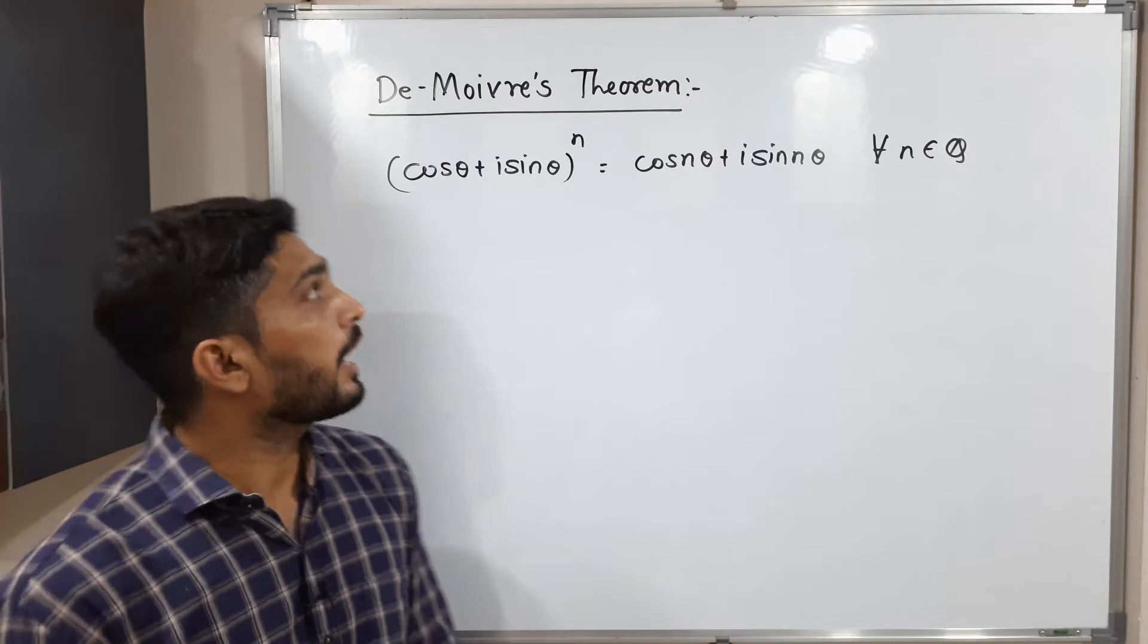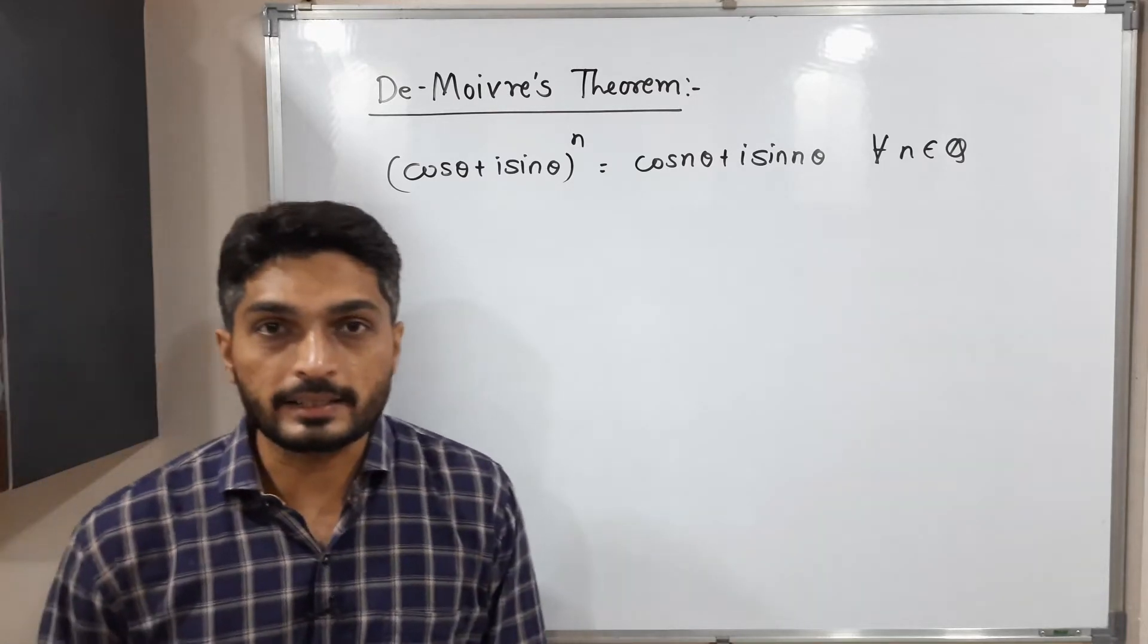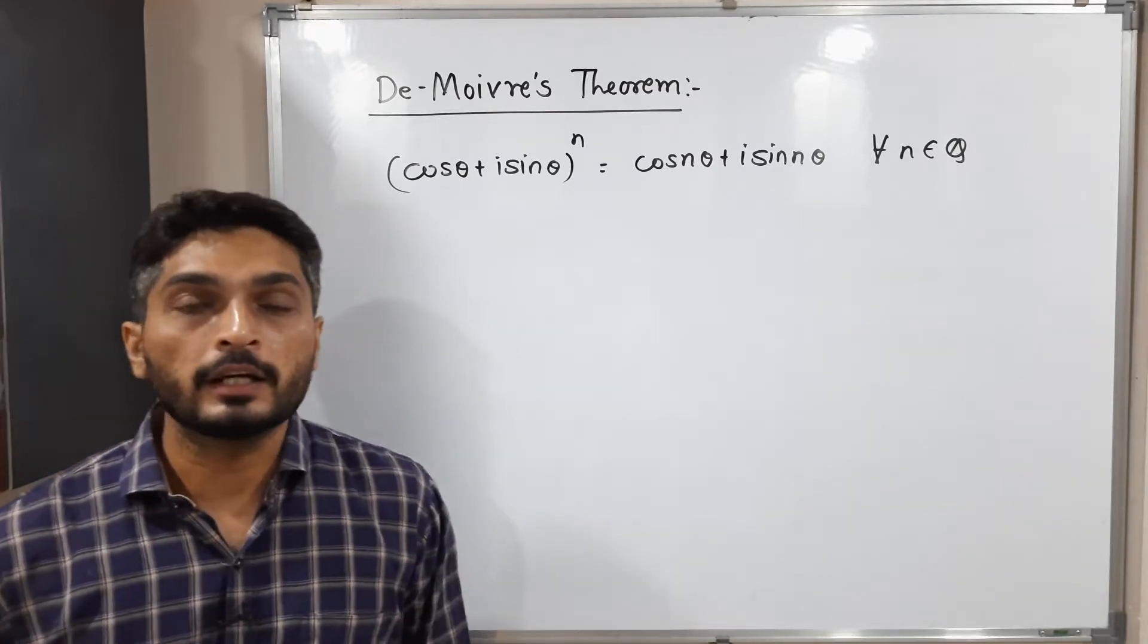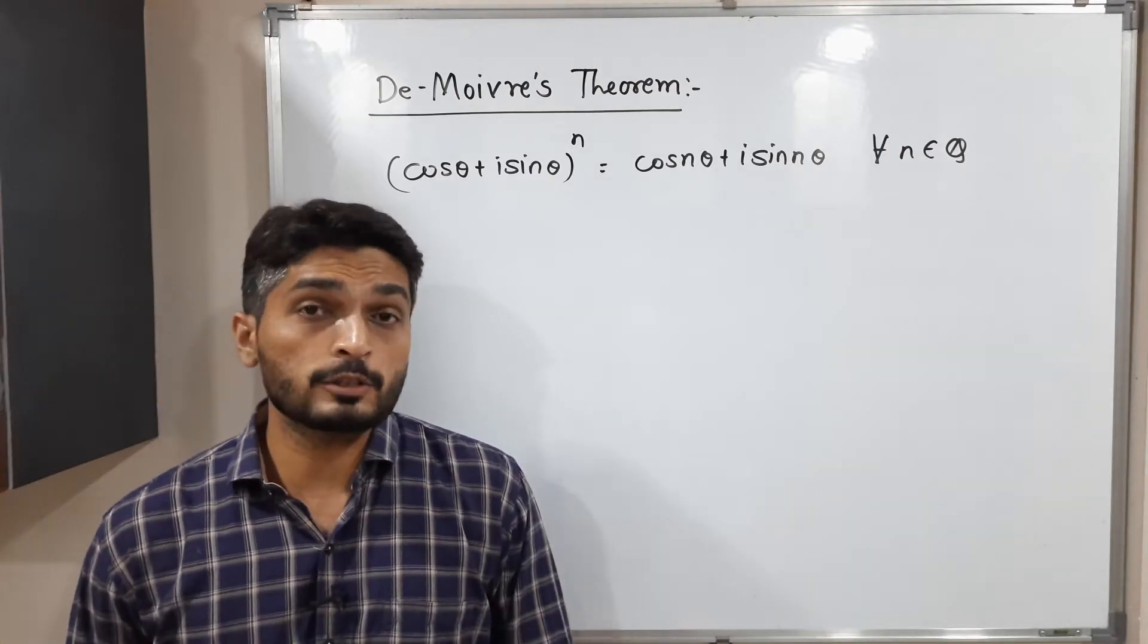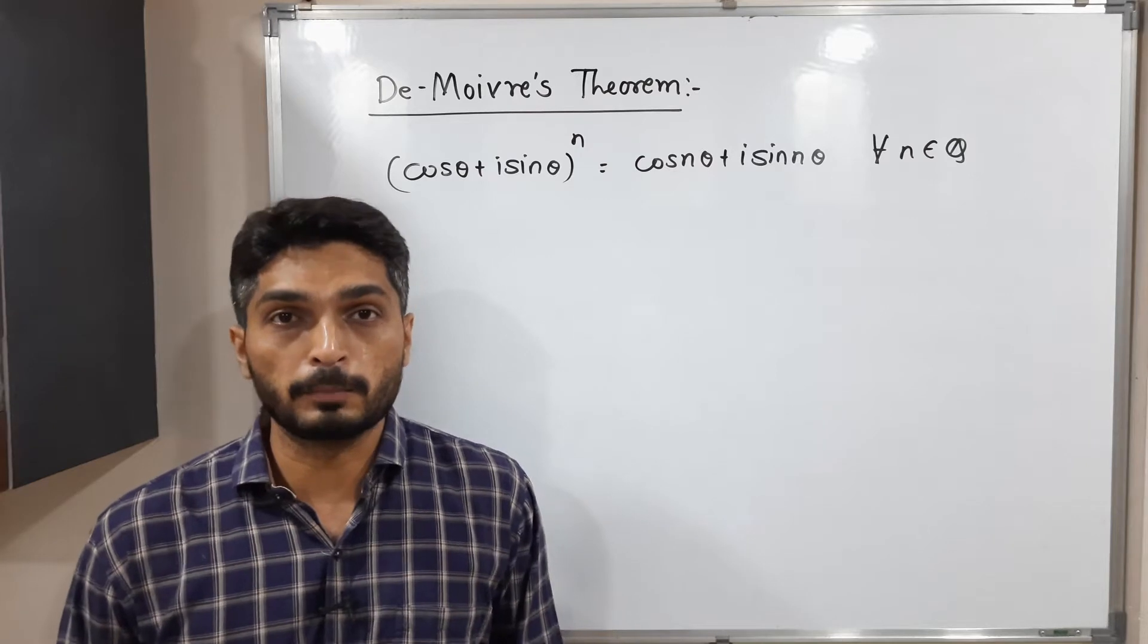See, this theorem says if you have (cos θ + i sin θ)^n, definitely we can write cos nθ + i sin nθ, and it is true for every rational number n.